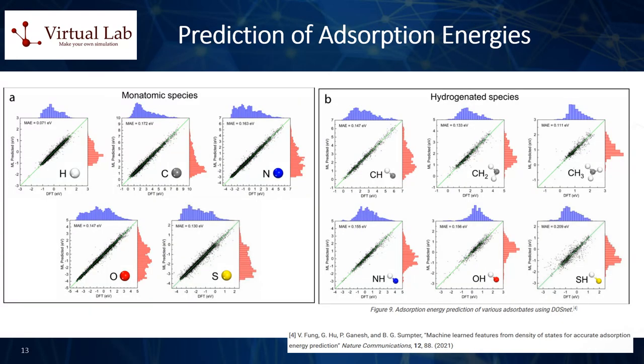The biggest advantage of the DOS-NET approach is that if you know the DOS of a specific catalyst surface, you can learn its corresponding adsorption energy model regardless of the type of adsorbate. In this research, adsorption energies of various monatomic adsorbates and hydrogenated molecules were predicted with very high accuracy, as demonstrated by the graphics shown in this slide.